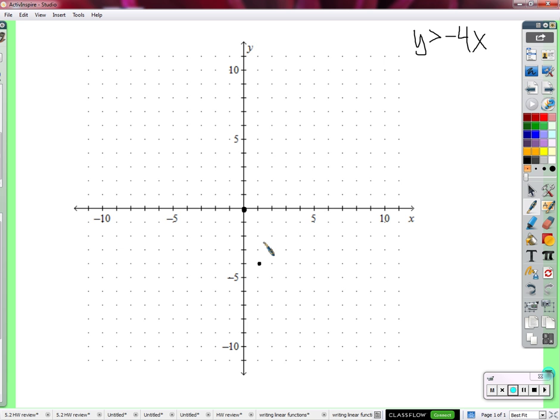Does equal mean true, necessarily? No. Is it true in this case? No. We do not like the points on the line y equals negative 4x, because it makes both sides of the inequality equal. And there is no equal condition, so we don't consider that. So we draw what kind of a line? Dotted.